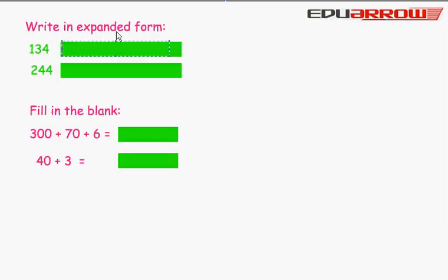Write in expanded form. 134 - We write here 100 plus 30 plus 4. 244 - We write here 200 plus 40 plus 4.